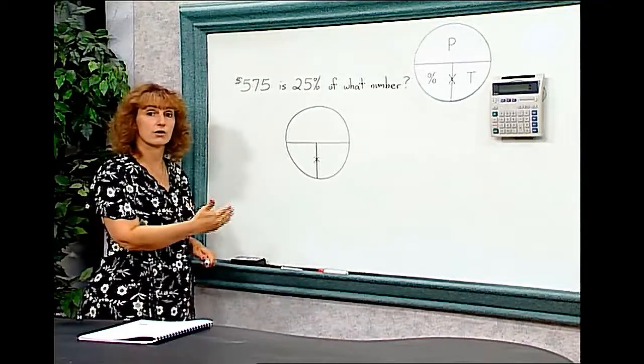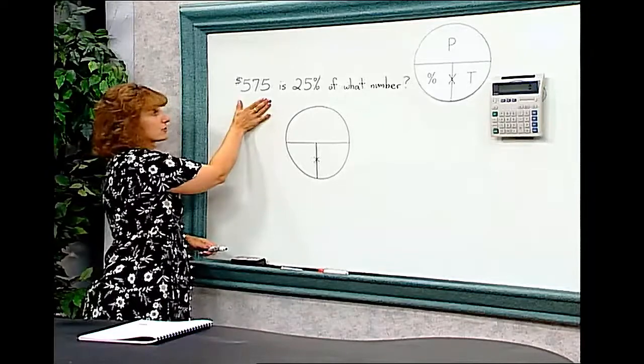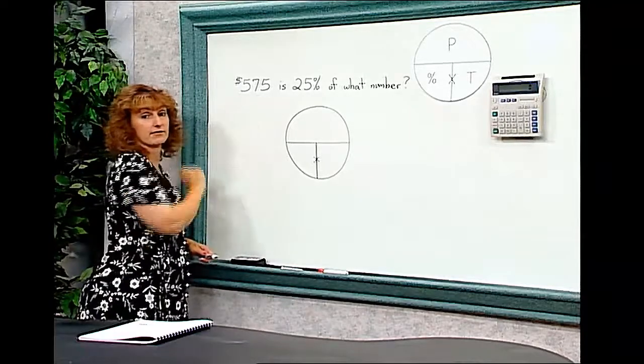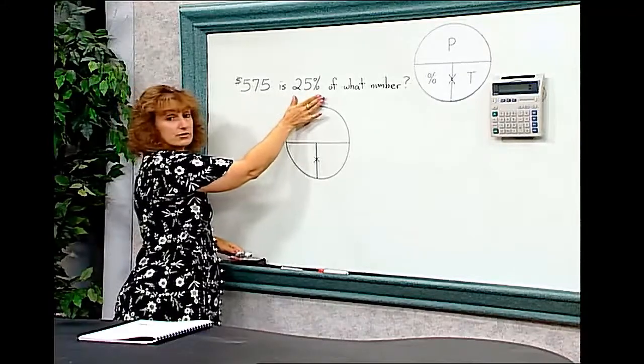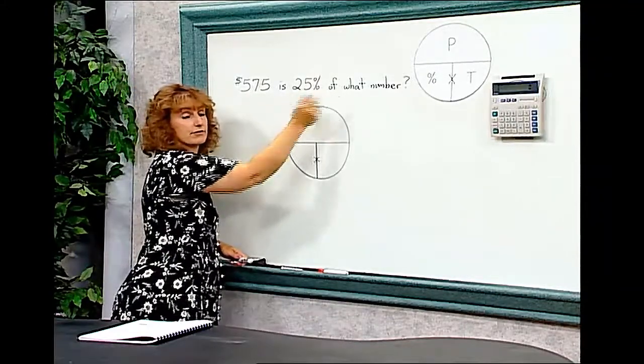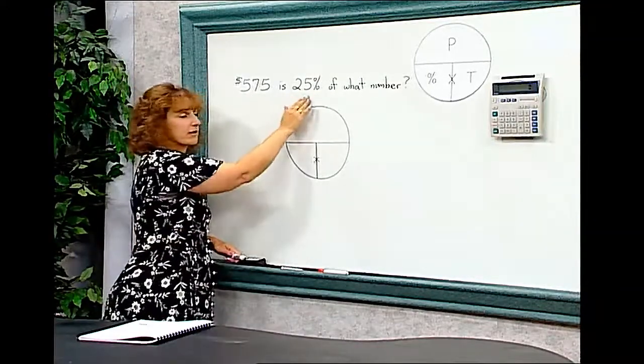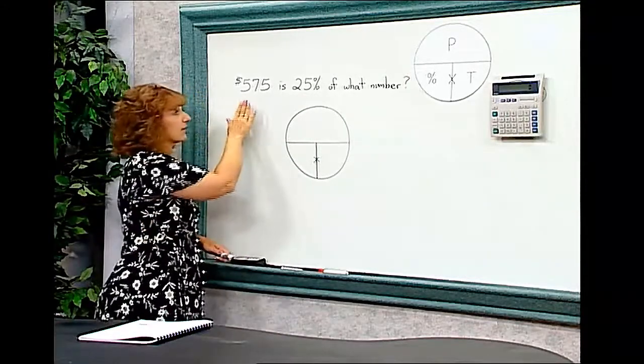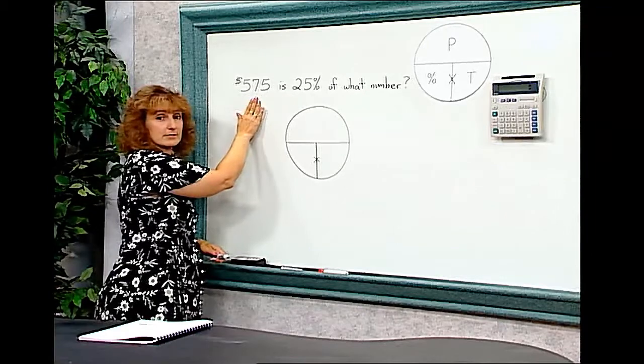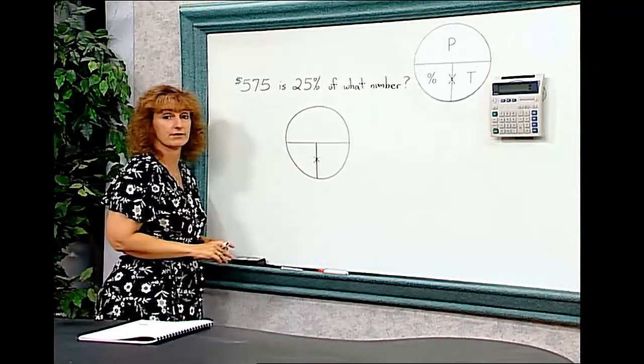So when we're looking for the total cost of the car, our answer should be larger than $575. Since the $575 is 25 percent of the total cost and 25 percent is one-fourth, we should think that the cost of the car should be approximately four times larger than the $575.